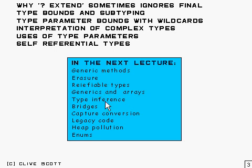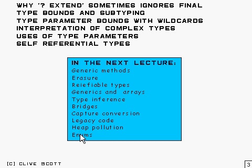Type inference, of course, is all tied up with generic methods, and so are bridges and capture conversion. Interfacing to legacy code, and heap pollution can result from that sort of thing. And enums — although enums are self-referential types and I will briefly mention them here, I'll go into a lot more detail in the next lecture.